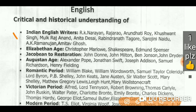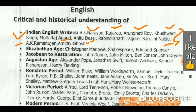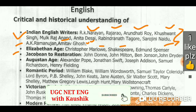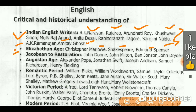I have covered Indian Writings in English. You will find R.K. Narayan, Raja Rao, Arundhati Roy, Khushwant Singh, Mulk Raj Anand, Anita Desai — I have not covered this one — Sarojani Naidu, E.K. Ramanujan, and Amitav Ghosh. You can find all these on my channel. For Elizabethan Age, you will find Marlowe, Shakespeare, and Edmund Spencer. You can search Elizabethan Age by Kaushik, Shakespeare by Kaushik, Spencer by Kaushik — you will find these things there.